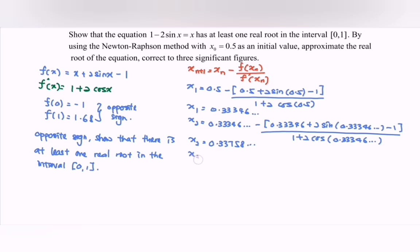Repeat the process. x₃ = 0.33758. Notice that we have repeated cases, so the approximate real root of the equation correct to three significant figures is x = 0.338.